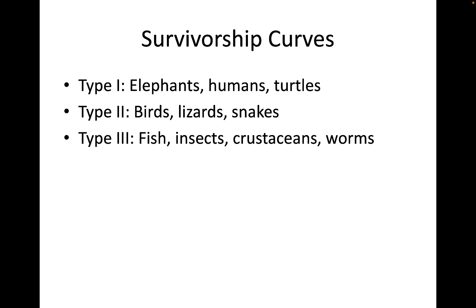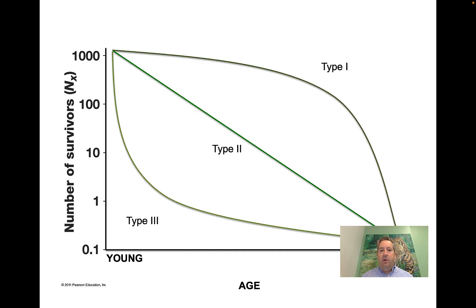To summarize: elephants, humans, several turtle species, and whales have Type 1 curves. Birds, lizards, and snakes have Type 2. Fish, insects, crustaceans, worms, and many invertebrate organisms have a Type 3 survivorship curve. So now we're going to have a quick quiz on the types of survivorship curves, and then we'll return to lecture and talk about population growth.